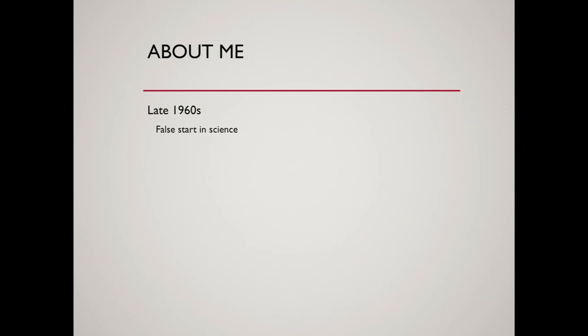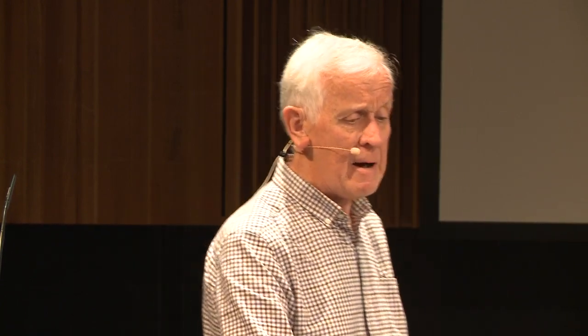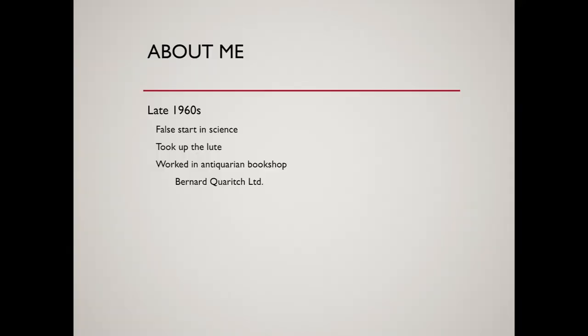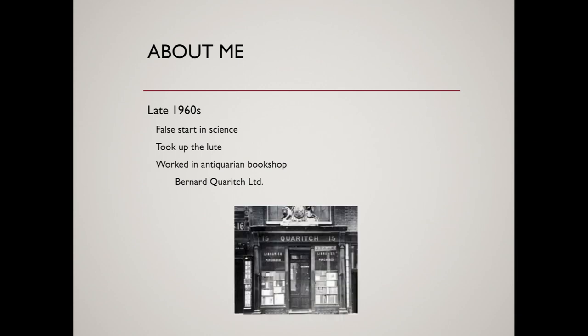About myself: as long ago as the late 60s, I made a false start in science. I tried to do a physics degree but wasn't good enough at mathematics, so I took up the lute and dropped out in the famous year 1968, when lots of people — it was very fashionable to do that kind of thing. If you ask your parents about this, they will confirm that. And then I worked in an antiquarian bookshop — now that's another weird thing to do.